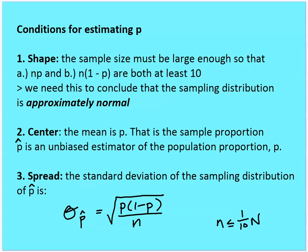In that case, we can conclude the sampling distribution is approximately normal. For center, the mean is going to be P — that is, the sample proportion is going to be an unbiased estimator of the population proportion. For spread, we check the independence 10% rule: if n is less than or equal to one-tenth of N, then we can use the formula for standard deviation of the sampling distribution, which is the square root of P times (1 minus P).